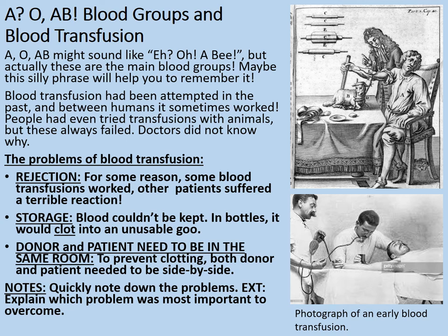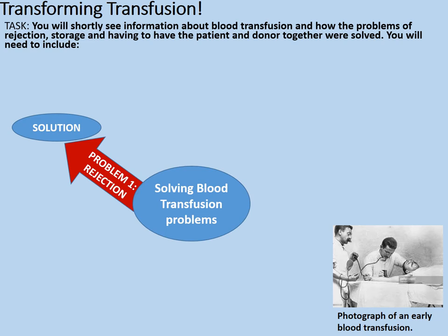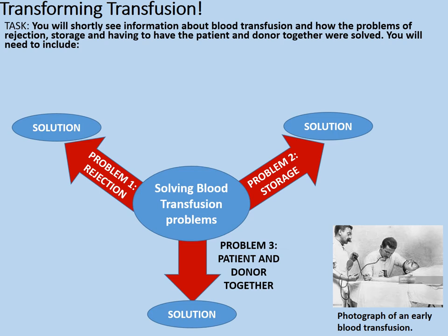We're now going to look through how each of these three problems were solved one at a time. You will see information about blood transfusion and how the problems of rejection, storage, and having to have the patient and donor together were solved. You will need to include: problem one and its solution, problem two and its solution, and problem three and its solution.